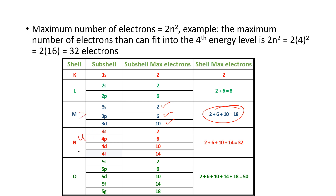For the fourth shell n=4, there are four subshells: s, p, d, and f. The s subshell gives 2 electrons, p gives 6, d gives 10, and the f subshell has 7 orbitals, so 7×2=14 electrons. Adding these: 2+6+10+14=32 electrons total in the fourth shell.